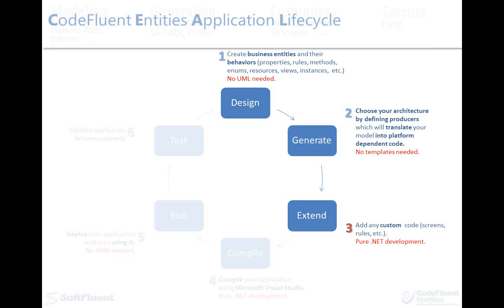I'd also like to emphasize that all handmade extensions, such as partial classes, won't get overwritten on the next generation. This is also true in the database. CodeFluent Entities provides a diff engine which updates the database at each generation instead of dropping everything and recreating it. By updating, I mean it will rename a column if you rename the property, or change a type if you change the property type. This way, you'll never lose data, and you'll always be able to continuously generate until your application is complete.